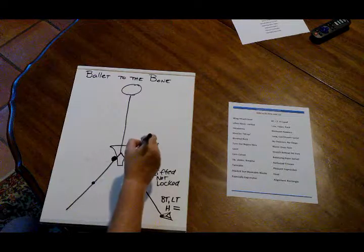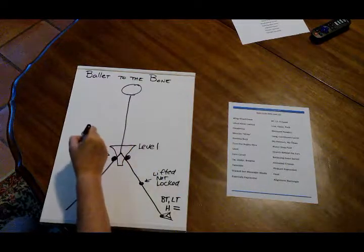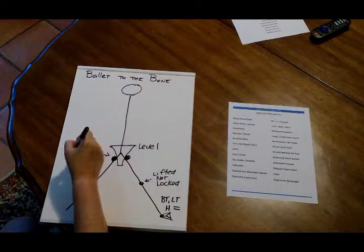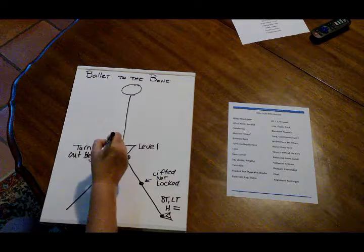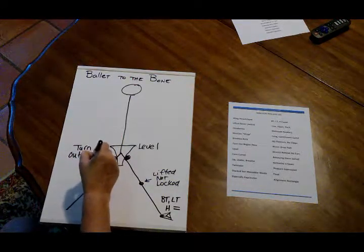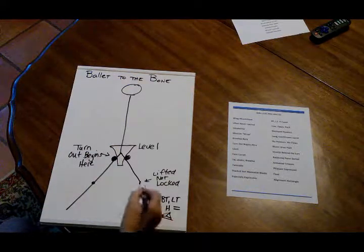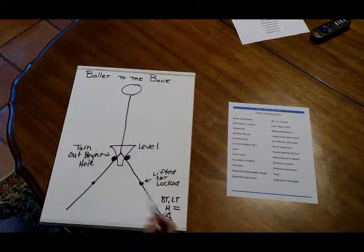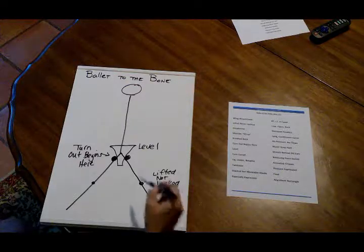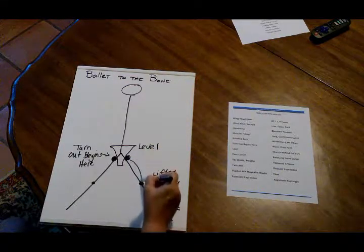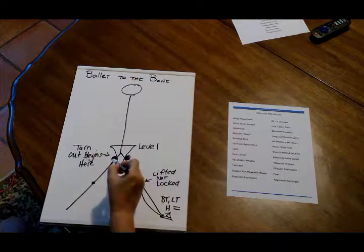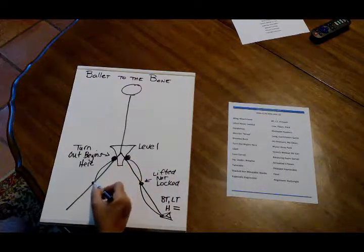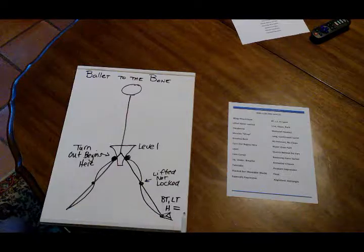We tell them that the turnout begins here. Turnout starts in the hip sockets. You can't tell them enough. They're going to try to crank from the bottom up. That is not achieved by the bones just magically turning out, but the muscles have to work. I like this image that the muscles wrap around.